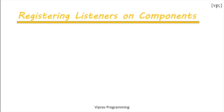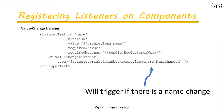Then there's registering listeners on components. In this example, we can see that this puts a custom listener on the name component through the value change listener tag. This tag will trigger the listener if there's any change made to the name text, which means that this class will run if anything is changed in the name tag.